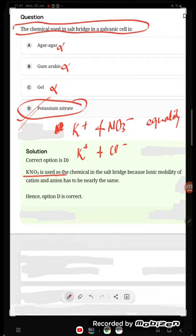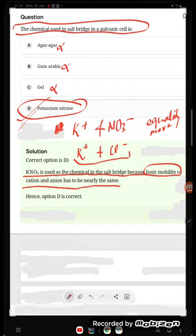The reason KNO3 is used as the chemical in the salt bridge is because ionic mobility of cation and anion are nearly the same. They equally move - K+, NO3- equally move. Both are equally mobile, so they are used as the chemical in the salt bridge.